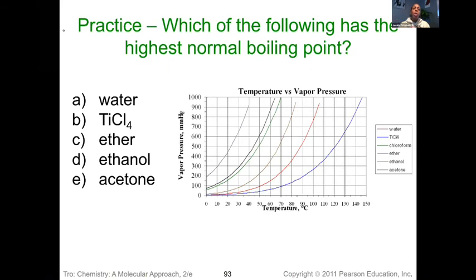We can also look at the vapor pressure charts to predict which substance would have the highest boiling point. The normal boiling point is at atmospheric pressure, which is 760 millimeters of mercury. The substance with the highest boiling point would be titanium tetrachloride, coming in at about 140 degrees or so.